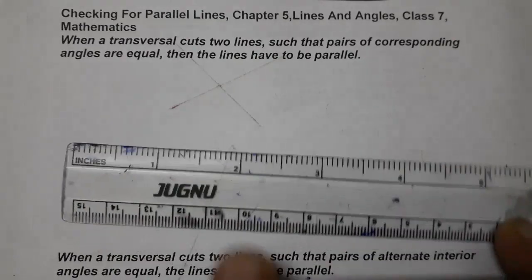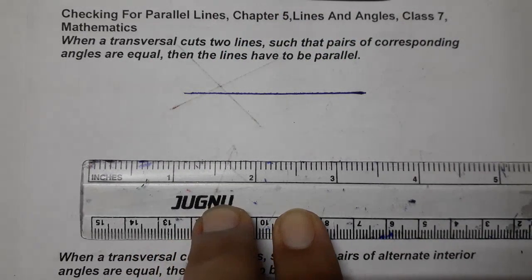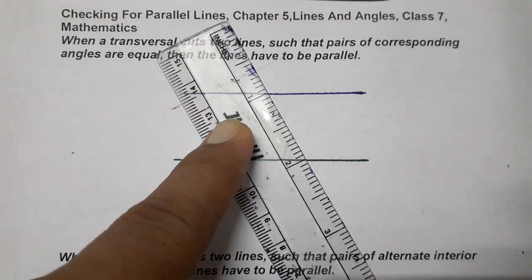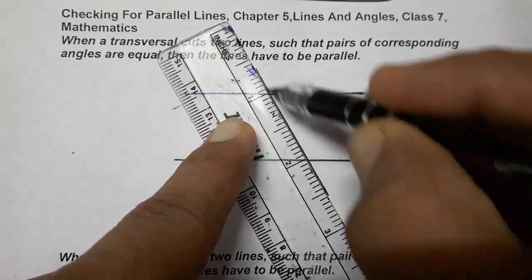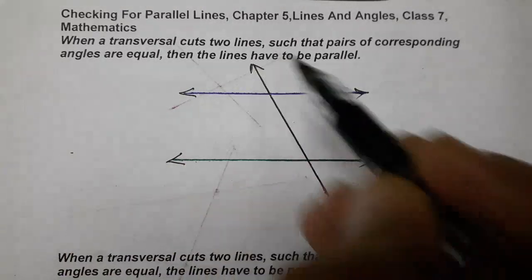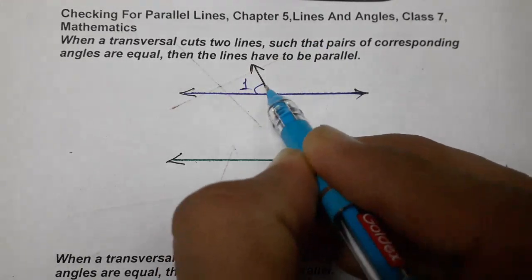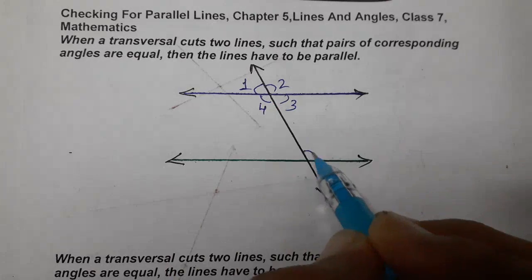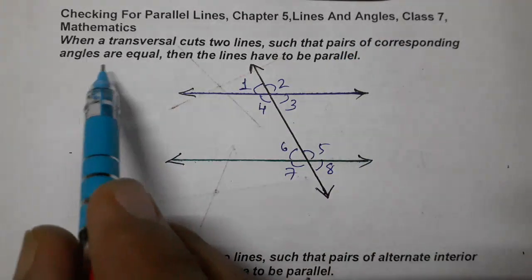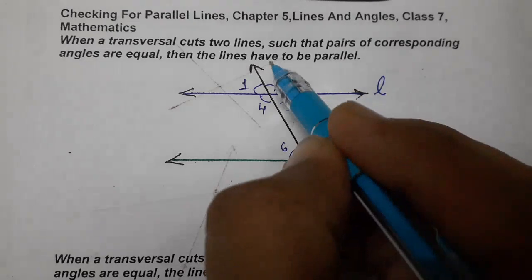Let's make two lines and a transversal. We have two lines that are not parallel, but we have to prove them parallel. Let's give the angle numbers: one, two, three, four, five, six, seven, and eight. We name the lines L and M, and the transversal as T.